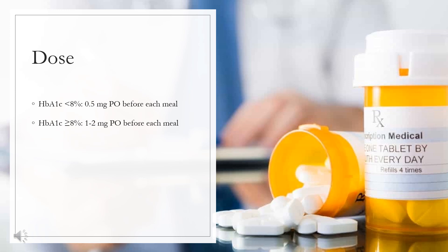Starting dose: HbA1c less than 8%, 0.5 mg PO before each meal. HbA1c greater than or equal to 8%, 1 to 2 mg PO before each meal.